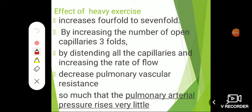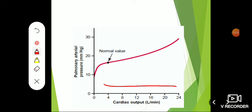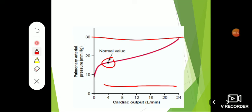By distending all the capillaries and increasing the rate of flow, pulmonary resistance decreases. The extra blood coming to the lungs during heavy exercise is handled by these normally dormant or closed capillaries opening up, so pulmonary resistance decreases and pulmonary artery pressure rises very little. You can see in this diagram that as cardiac output rises, pulmonary artery pressure increases only from about 25 to 30 mmHg.